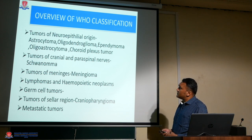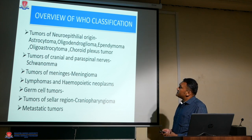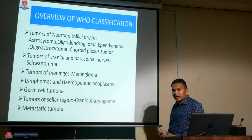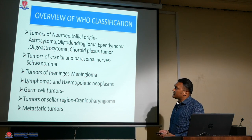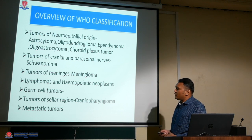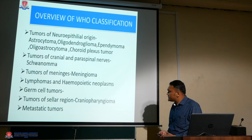The WHO classification categorizes tumors according to their histological origin: tumors of neuroepithelial origin such as astrocytoma, oligodendroglioma, ependymoma, oligo-astrocytoma, and choroid plexus tumors; tumors of cranial and paraspinal nerves like schwannoma and neurofibroma; tumors of the meninges like meningioma; lymphoma and hemopoietic neoplasms; germ cell tumors; tumors of the sellar region like craniopharyngioma; and metastatic tumors.